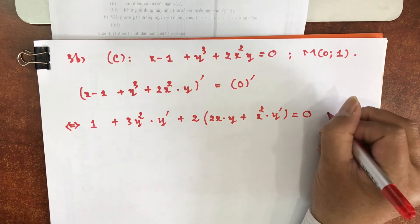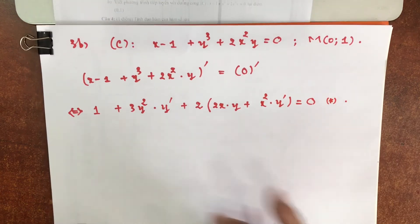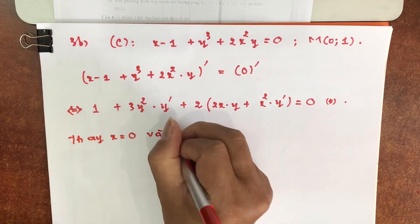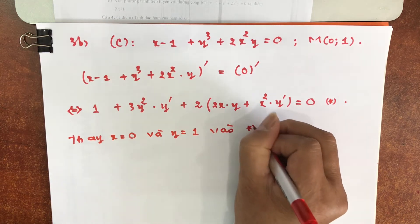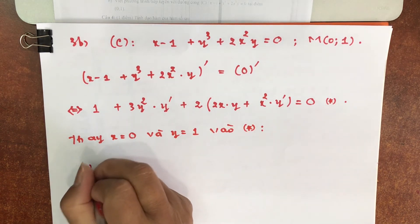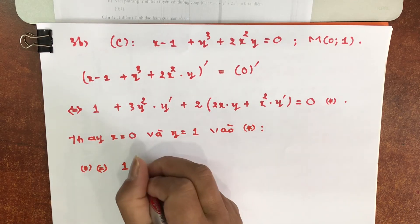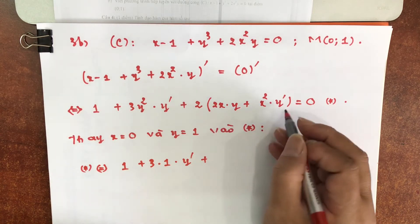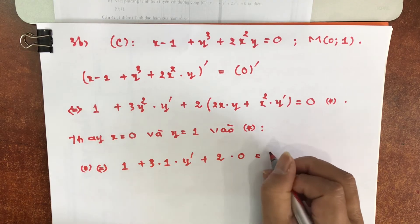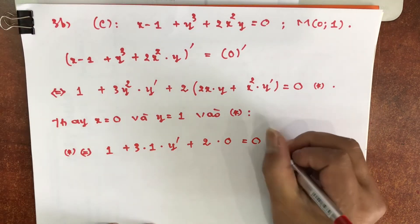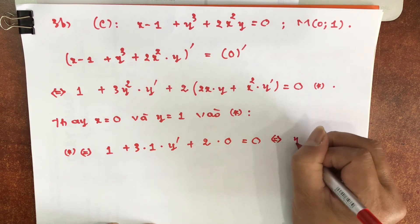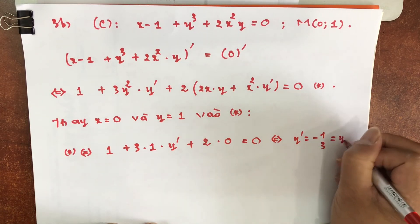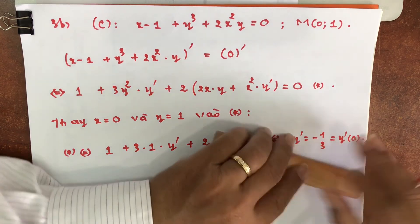Phía phải là 0, đạo hàm bằng 0. Bây giờ thay x bằng 0 và y bằng 1 vào đẳng thức xác định. Sau trở thành: 1 cộng 3 nhân y² là nhân 1 nhân với y', cộng với thay nguyên cái y bằng 0 thì các anh chỉ thay là 2 nhân với 0 luôn, bằng 0. Như vậy từ đây dẫn đến y' là bằng trừ 1 chia 3. Và đó chính là y' tại x bằng 0.